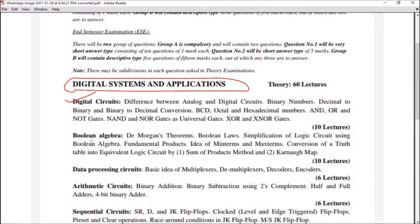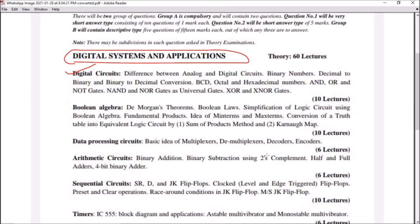The second chapter includes Boolean algebra, in which we'll study De Morgan's theorem, Boolean laws, simplification of logic circuits using Boolean algebra, fundamental products, the idea of minterm and maxterm, and conversion of truth tables into equivalent logic circuits by sum of product form and Karnaugh map.